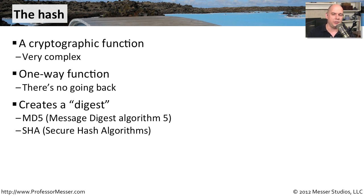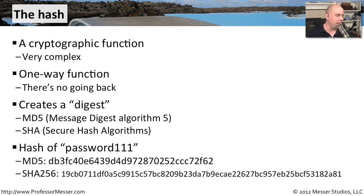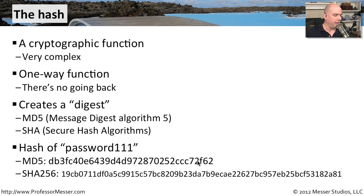There are a lot of different ways to compute a hash. Two very common ones: one is called MD5, which stands for Message Digest Algorithm 5, and another more common one these days is called SHA, or S-H-A, which stands for Secure Hash Algorithm. For example, if we hash the password "password111" using the MD5 function, a long string of text comes out the other side. If we put it into the SHA-256 algorithm, it outputs a completely different long string of text — it looks nothing like the original password, and there's no way to reverse it back.